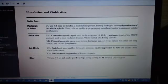Clinical uses. VC: Chemotherapeutic agent used in the treatment of ALL, lymphomas, and is part of the MOP protocol used to treat Hodgkin's disease, Wilms tumor, and Ewing sarcoma. Vinblastine is a chemotherapeutic agent used to treat testicular cancer, breast cancer, non-small cell lung cancer, and various lymphomas.